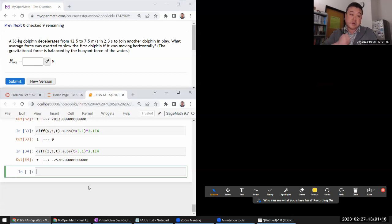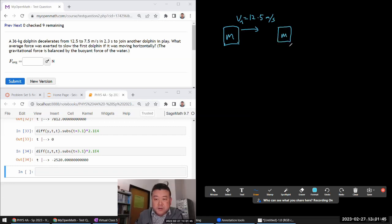This question says... let me just doodle as I'm reading the question so that I know what it is they are asking. So, we have something that's moving at some 12.5 meter per second. And then to, it's still moving sometime later, but to 7.5 meter per second. And from here to here, that happens in amount of time of 2.3 seconds. To join another dolphin in play. Well, average force was exerted to slow the first dolphin if it was moving horizontally.